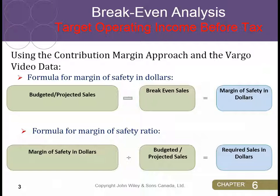The second way to express it is as a ratio. For the margin of safety ratio, you take the margin of safety in dollars you just calculated and divide it by your budgeted or projected sales. That gives you a percentage. The reason calculating the percentage is useful is because it adds weighting. For instance, if I told you the margin of safety in dollars was $175,000 and asked whether that's good or bad, you'd have no real way to answer.